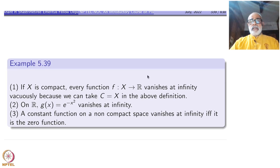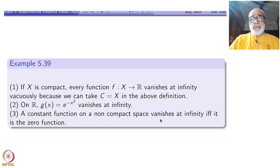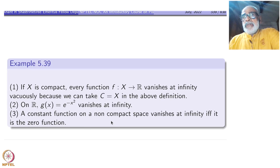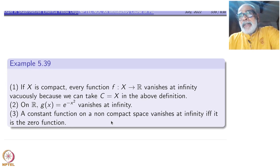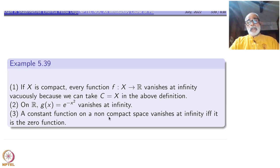A constant function on a non-compact space vanishes at infinity if and only if it is the zero function. Take any constant function and take epsilon less than the modulus of that constant — the condition will not be satisfied at all. So it vanishes at infinity only if it is the zero function. This is a strong conclusion: we are interested in subspaces having non-zero constants, but this condition and that are somewhat opposite of each other.